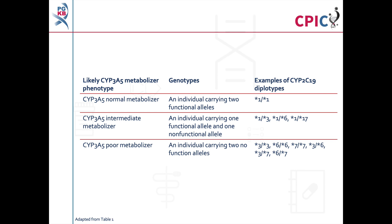Note that as more evidence becomes available, new star alleles can be added and the functional definition of some star alleles may change. An important caveat for all genotyping tests is that a normal function status is given to all alleles which are not detected in the assay. This can include rare increased function, reduced function, and non-functional alleles which are not routinely screened for in some genotyping tests.